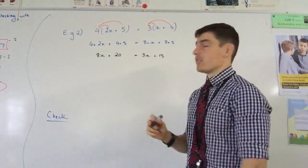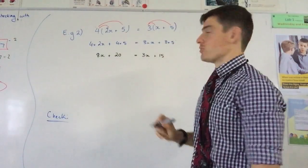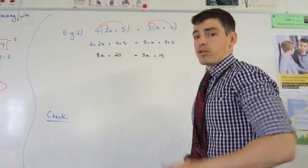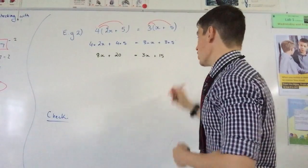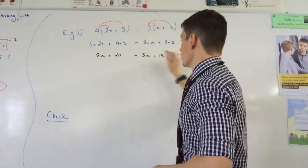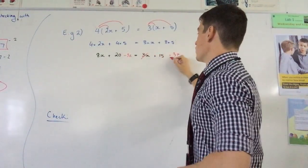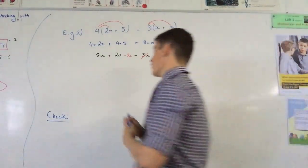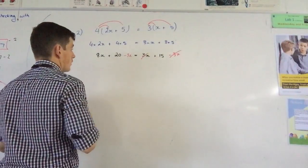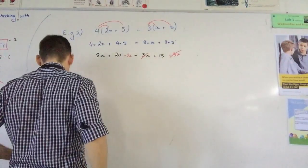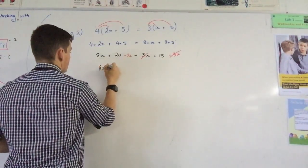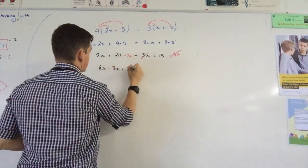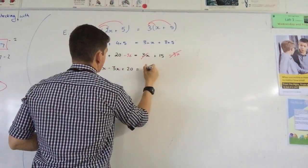So to get rid of the 3x, because I want to get rid of the 3x from this side, I subtract 3x from both sides. I don't move it, I subtract 3x from this side, I subtract 3x from this side. The 3x is cancelled on the right hand side, and now I've got 8x minus 3x plus 20 equals 15.